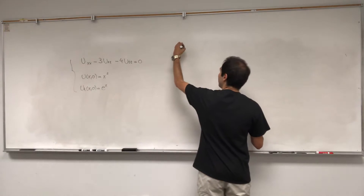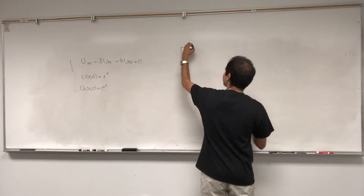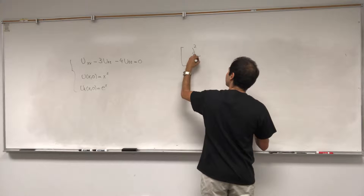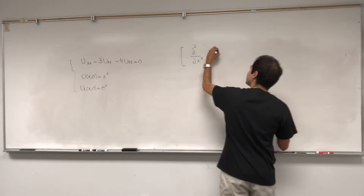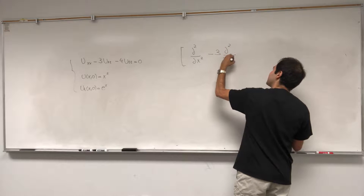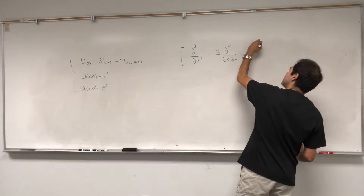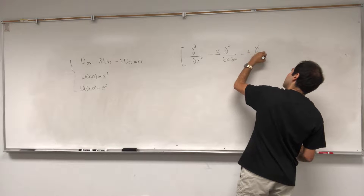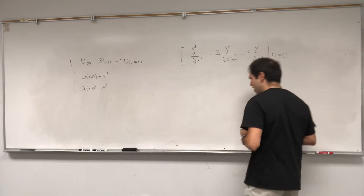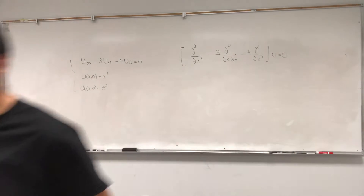Notice you can write this in terms of differential operators as simply d²/dx² minus 3·d²/dx·dt minus 4·d²/dt² acting on u equals zero, and you can factor that out one more step.